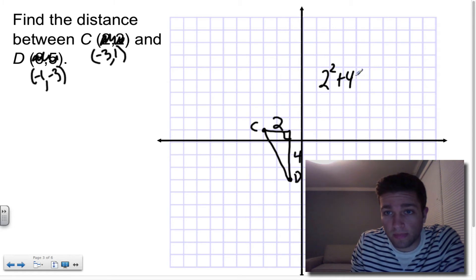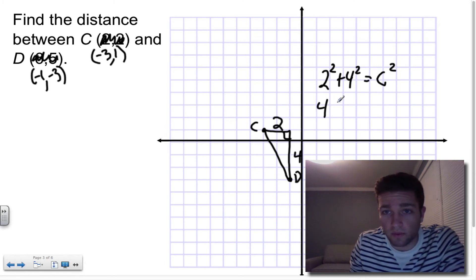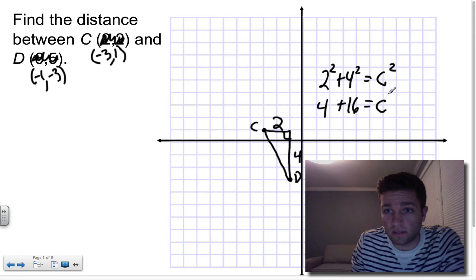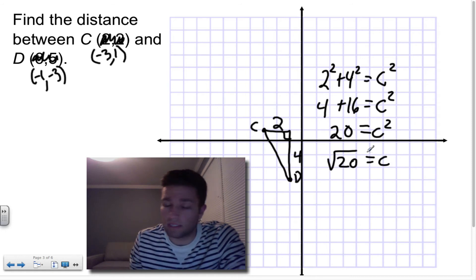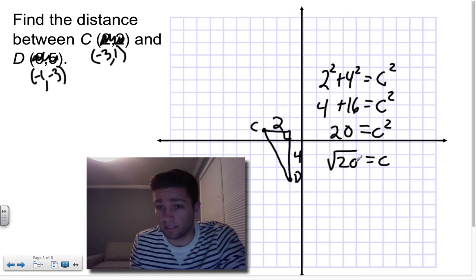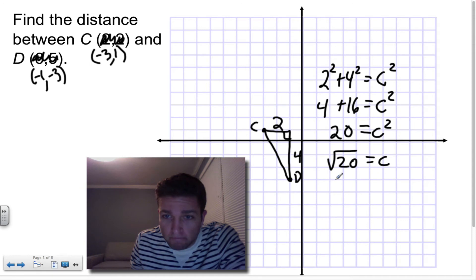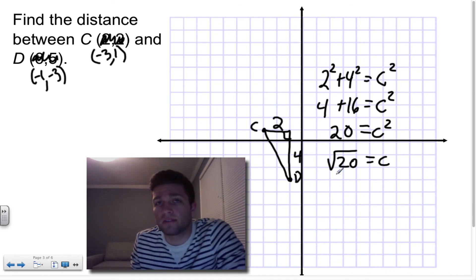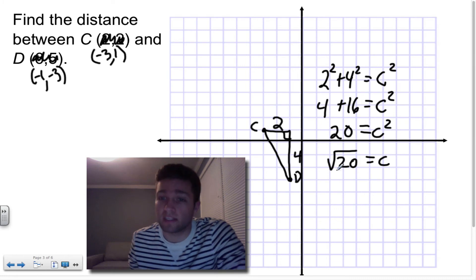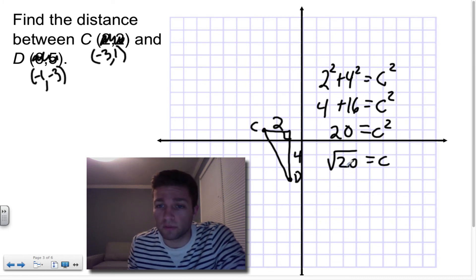So two squared plus four squared equals c squared. That would be four plus 16 equals c squared, which is 20. And then your answer is going to be the square root of 20. That's going to break down to some decimal, some decimal that's between four and five.